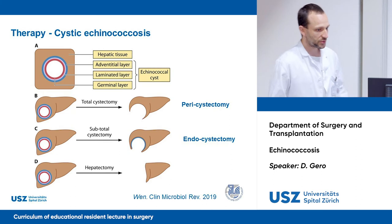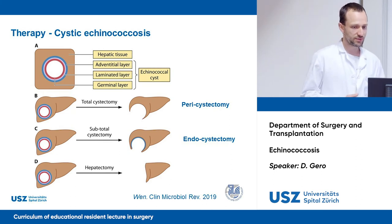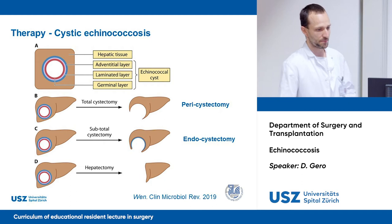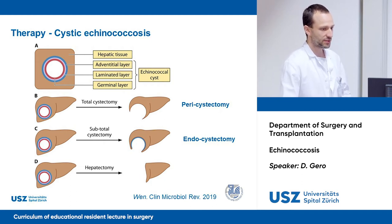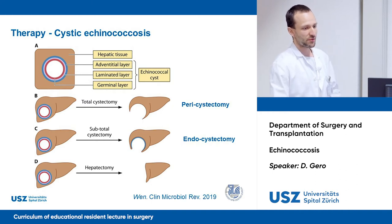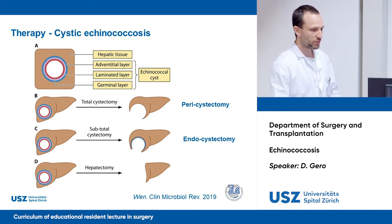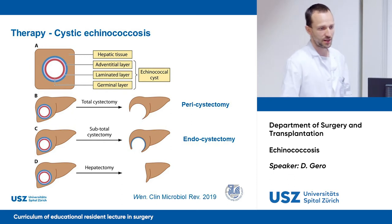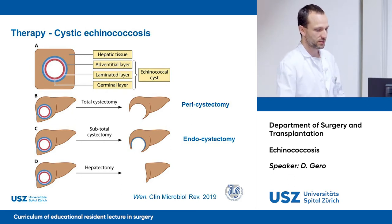On this figure, I would like to show the difference between endocystectomy and pericystectomy. The idea of pericystectomy is to remove the cyst in totality without opening it. When we perform endocystectomy, we leave the posterior wall of the cyst on the liver surface — this wall is composed of an adventitial layer, a laminated layer, and a germinal layer belonging to the echinococcal cyst.